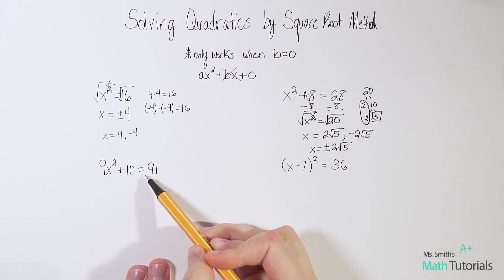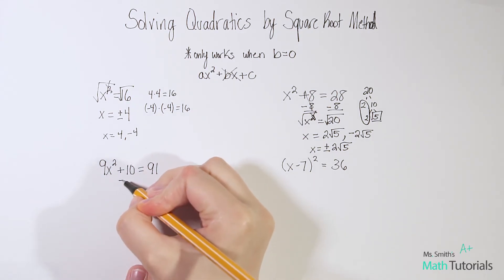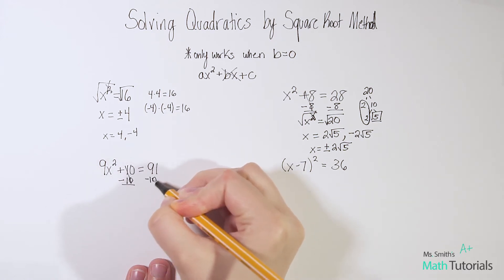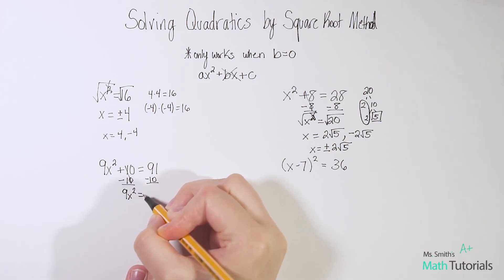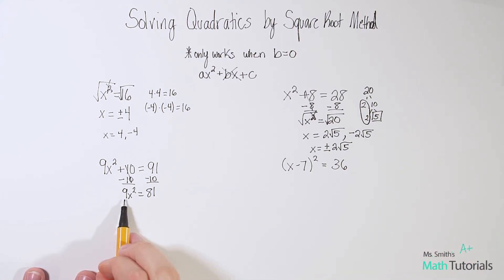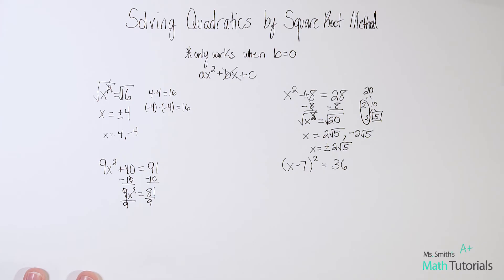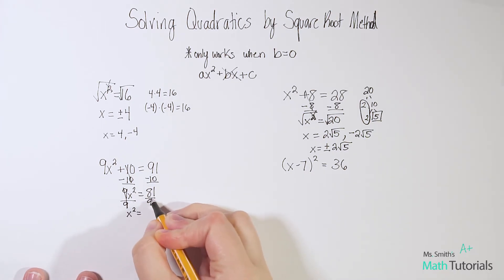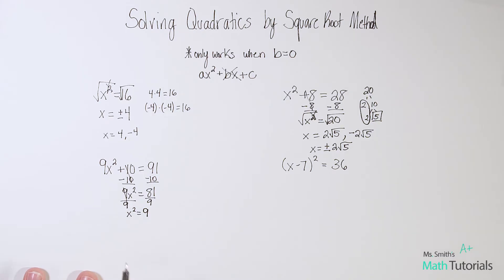Let's look at another example. Notice my x squared is definitely not alone — I'm going to need to get it alone. First, I'll subtract 10 from both sides, bringing down 9x squared equals 91 minus 10, which gives me 81. Now x squared is almost alone, but not quite — it still has this 9 out front, and this is 9 times x squared. To undo multiplication I divide, so I divide both sides by 9. That gives me x squared equals 81 divided by 9, which is 9.